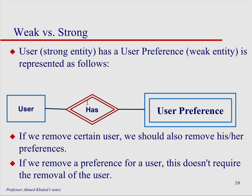Here's an example: user preference and user, where the relationship is 'has.' You can see how we depict it with the double diamonds and double rectangles. This is a weak relationship because if the user entity is deleted, we should also delete the user preference entity. However, if we remove user preference, the user entity can still stay.